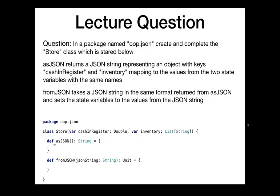The state variables are: how much cash is in the register, which is a double, and what inventory it has, which is a list of strings. No actual functionality - we don't have to build any functionality for this. But what we do want is two methods: one to convert this to a JSON string, and one to populate the state variables from a JSON string.